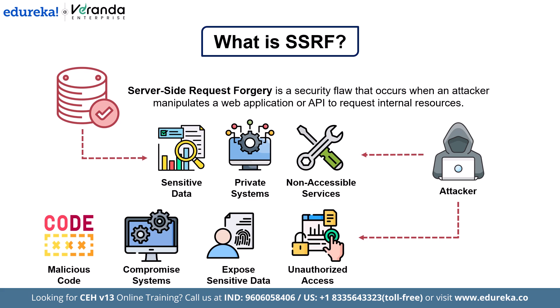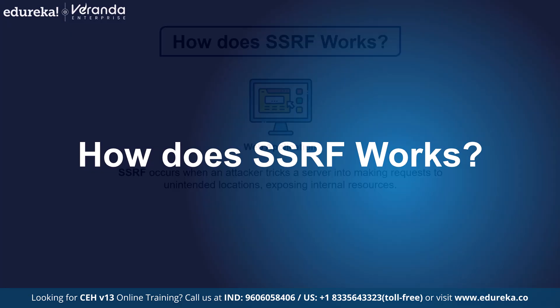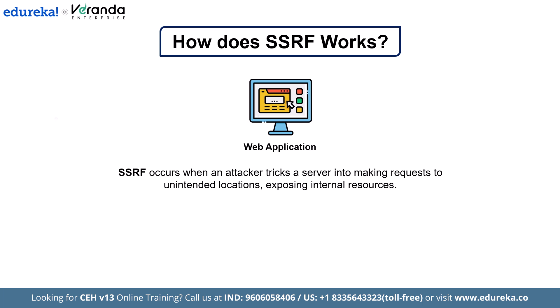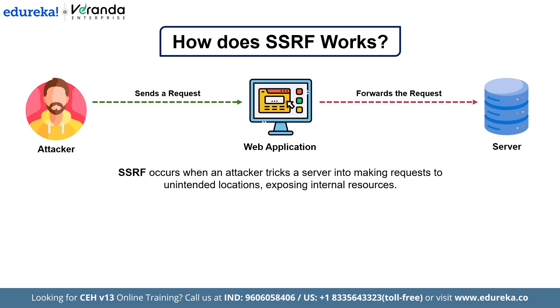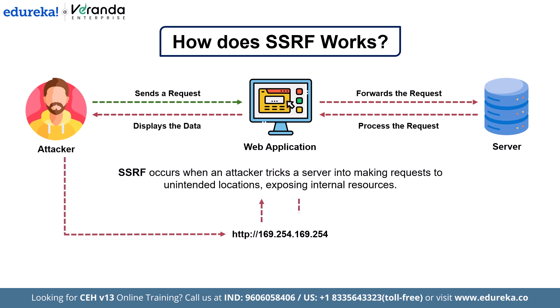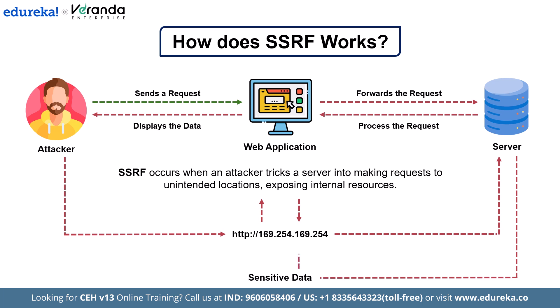Now let's dive into how this vulnerability works. Imagine a web application that allows users to import data from a URL, publish data to a URL, or fetch data from a remote resource. But what if the application doesn't validate or sanitize the user-provided URLs? The application becomes vulnerable to an SSRF attack. The attacker finds an input field, form, or parameter where they can specify a URL, and instead of providing a legitimate URL, the attacker crafts a malicious one — pointing to internal systems, private APIs, or even metadata services in cloud environments.